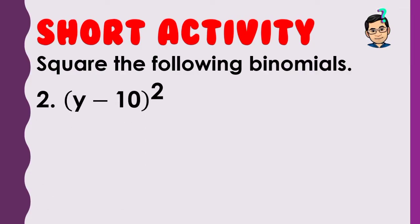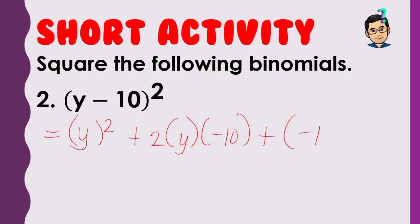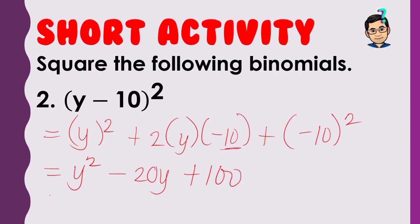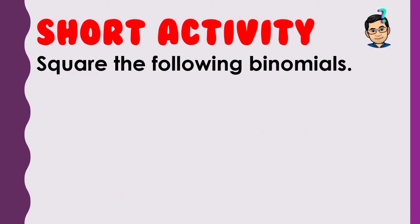Next, the quantity of y minus 10, squared. Again: square the first term, twice the product of the first and second term, then square the last term. Remember, the sign of the middle term follows the sign of the binomial — if it's negative, it stays attached to that number. So: y squared, plus 2 times y times negative 10 is negative 20y, and negative 10 squared is positive 100.